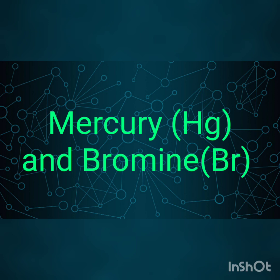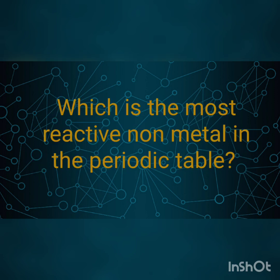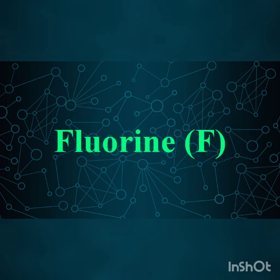Question number 10: Which is the most reactive known element in the periodic table? Fluorine. Fluorine has atomic number 9 and belongs to the halogens, group 17.